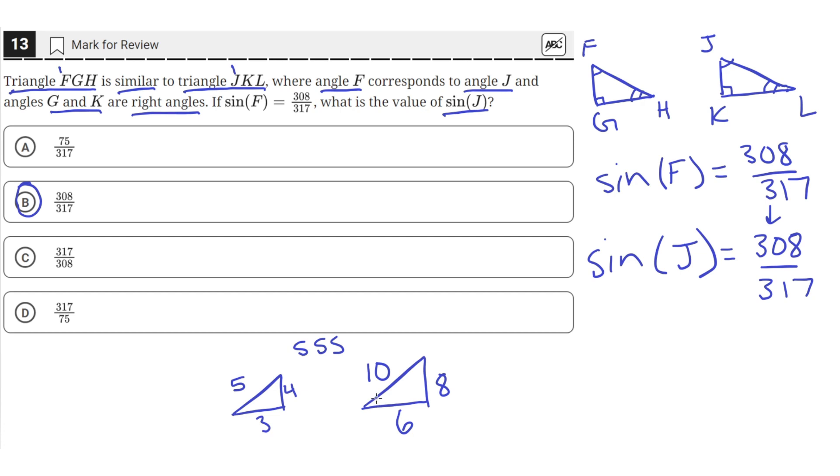Which means that when we take the sine of this angle and this angle. So the sine here is, we'll call this angle X. So the sine of X is just equal to opposite over hypotenuse, which is 4 over 5. And then here, the sine of angle Y, sine of Y is just equal to 8 over 10.